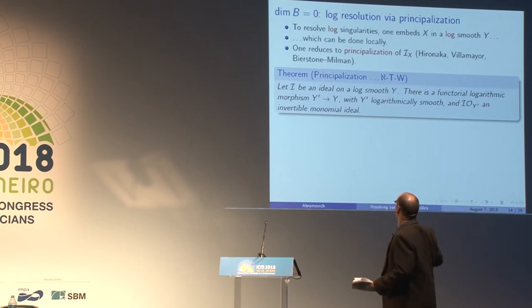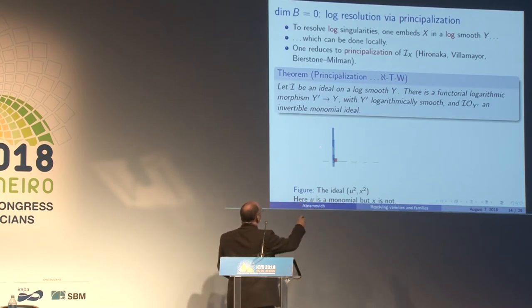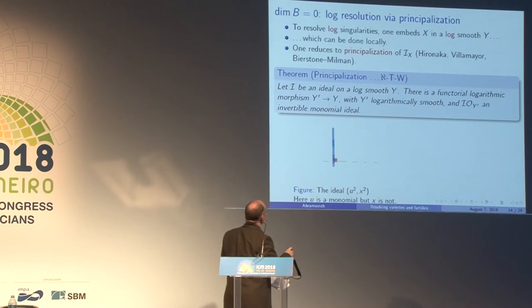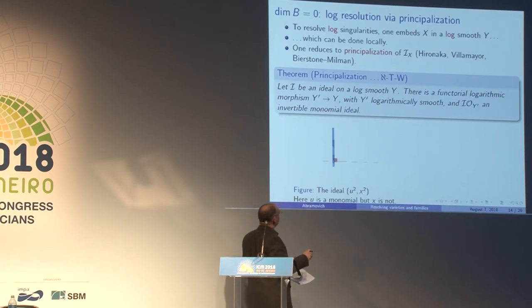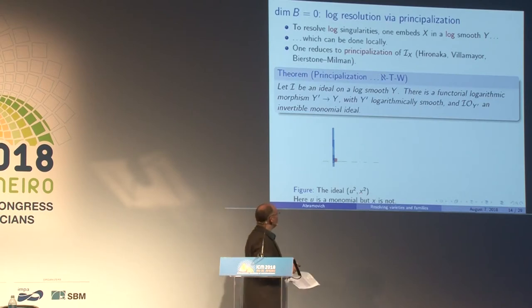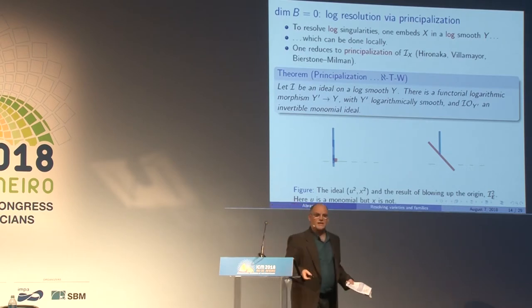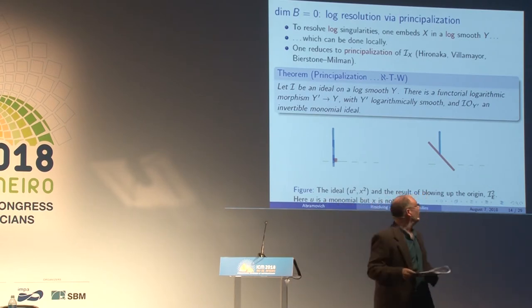Here's an example. This is u equals zero, where the first variable is monomial, drawn thick — the toroidal structure is given by this divisor. x equals zero is not part of the toroidal structure, drawn in green and dashed. The ideal I want to monomialize is u² · x². So u is a monomial but x is not. If you blow up the origin, the total transform of the ideal becomes the ideal of the exceptional squared, which is a monomial ideal — that's an example of principalization.